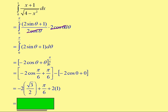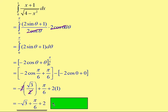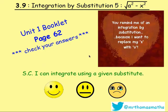Multiplying negative 2 by root 3 over 2, the 2s cancel, leaving negative root 3. Adding π/6 and then adding 2 gives the final exact answer: negative root 3 plus π/6 plus 2. Remember to leave exact values — don't use a calculator. Now try the practice questions on Integration by Substitution 5, page 62 of the booklet. Best of luck!